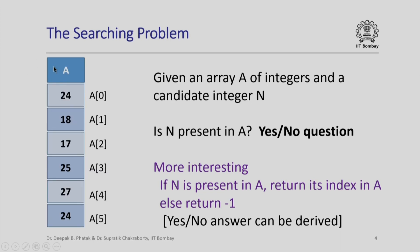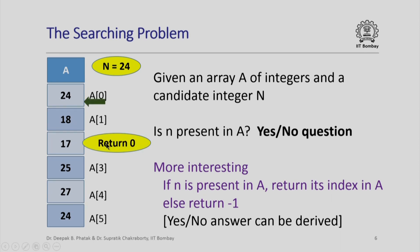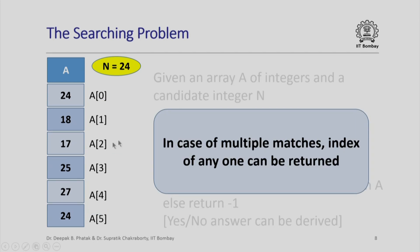Here is an example. Here is an array a of integers with elements a[0] through a[5]. If I want to check whether 27 is present, the answer should be its index — 27 is present, so the search should return 4. If I gave 23, which is not present, it should return minus 1. If I gave 24, note that there are two occurrences, so it could return either 0 or 5. In the case of multiple matches, the index of any one of them can be returned.